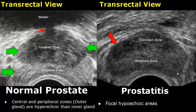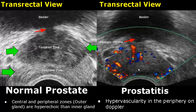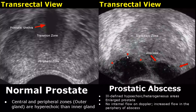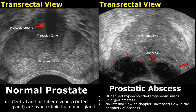Prostatitis is the inflammation of the prostate. The appearance may mimic prostate cancer because it also contains focal hypoechoic areas, but the peripheral zone is mostly clear. On color Doppler, increased vascularity is noted, suggesting inflammation. Prostatitis can lead to an abscess, which will appear as an ill-defined hypoechoic or heterogeneous area. The prostate will be enlarged, with no internal flow on Doppler, but increased flow in the periphery of the abscess.